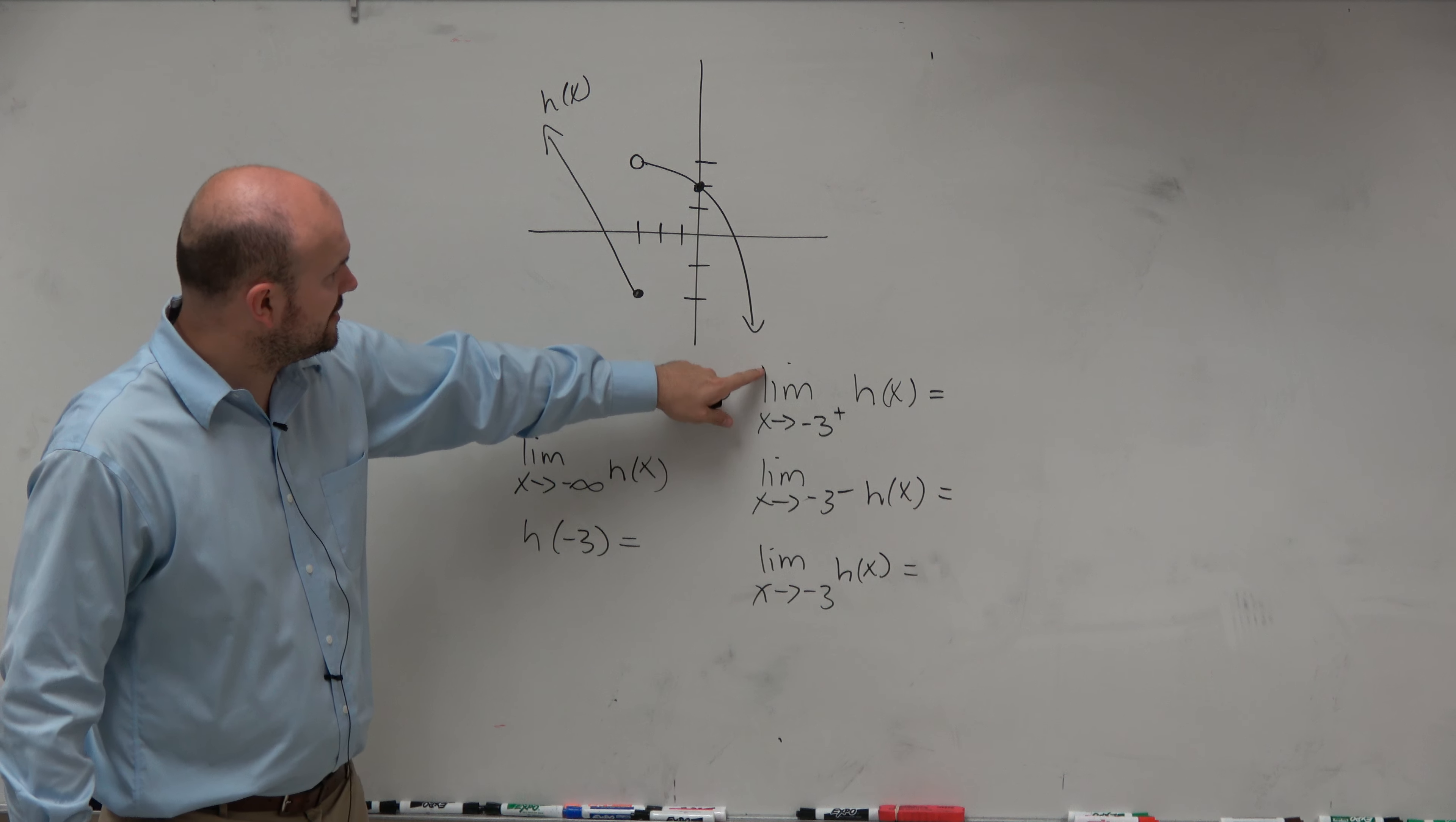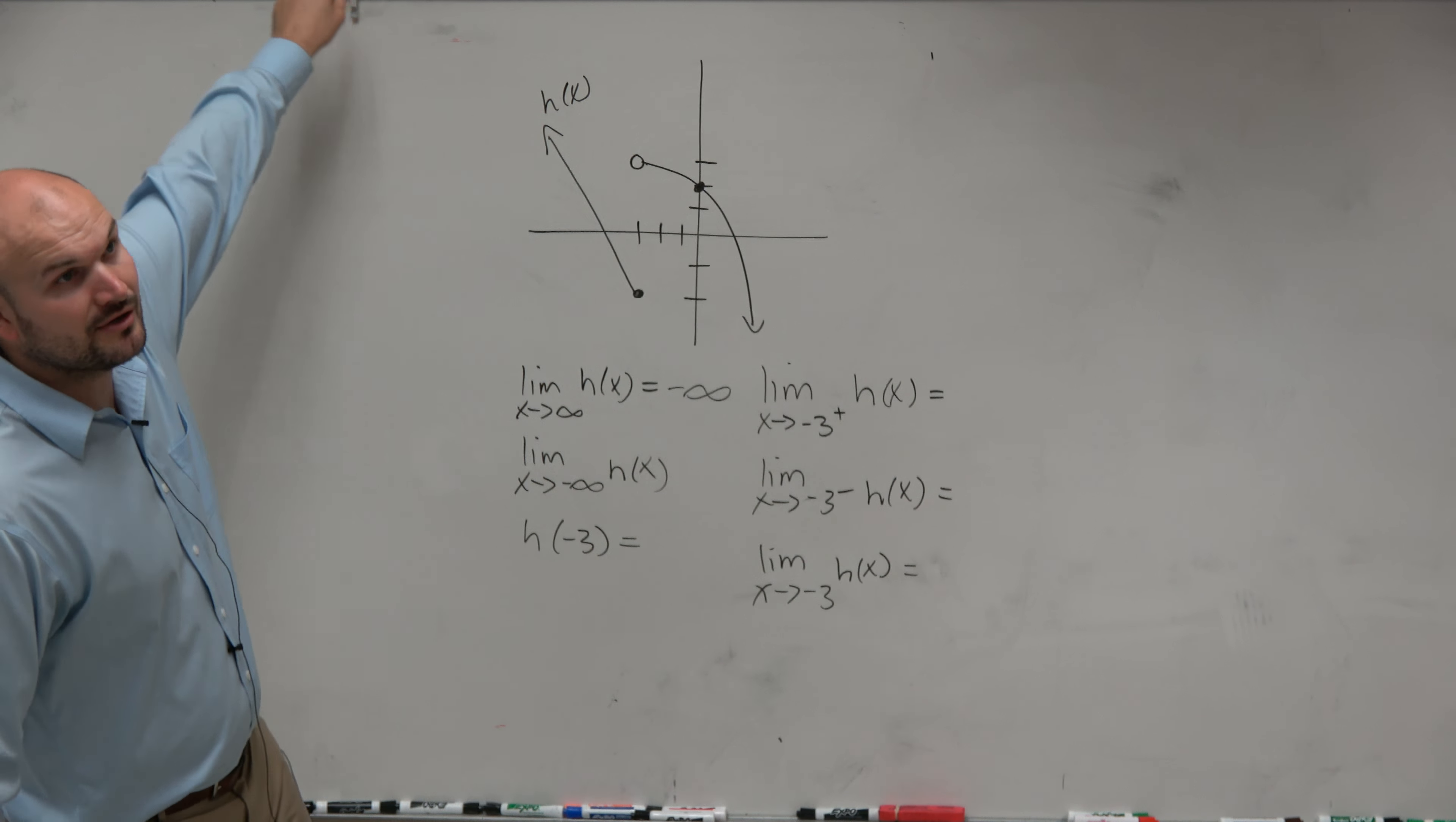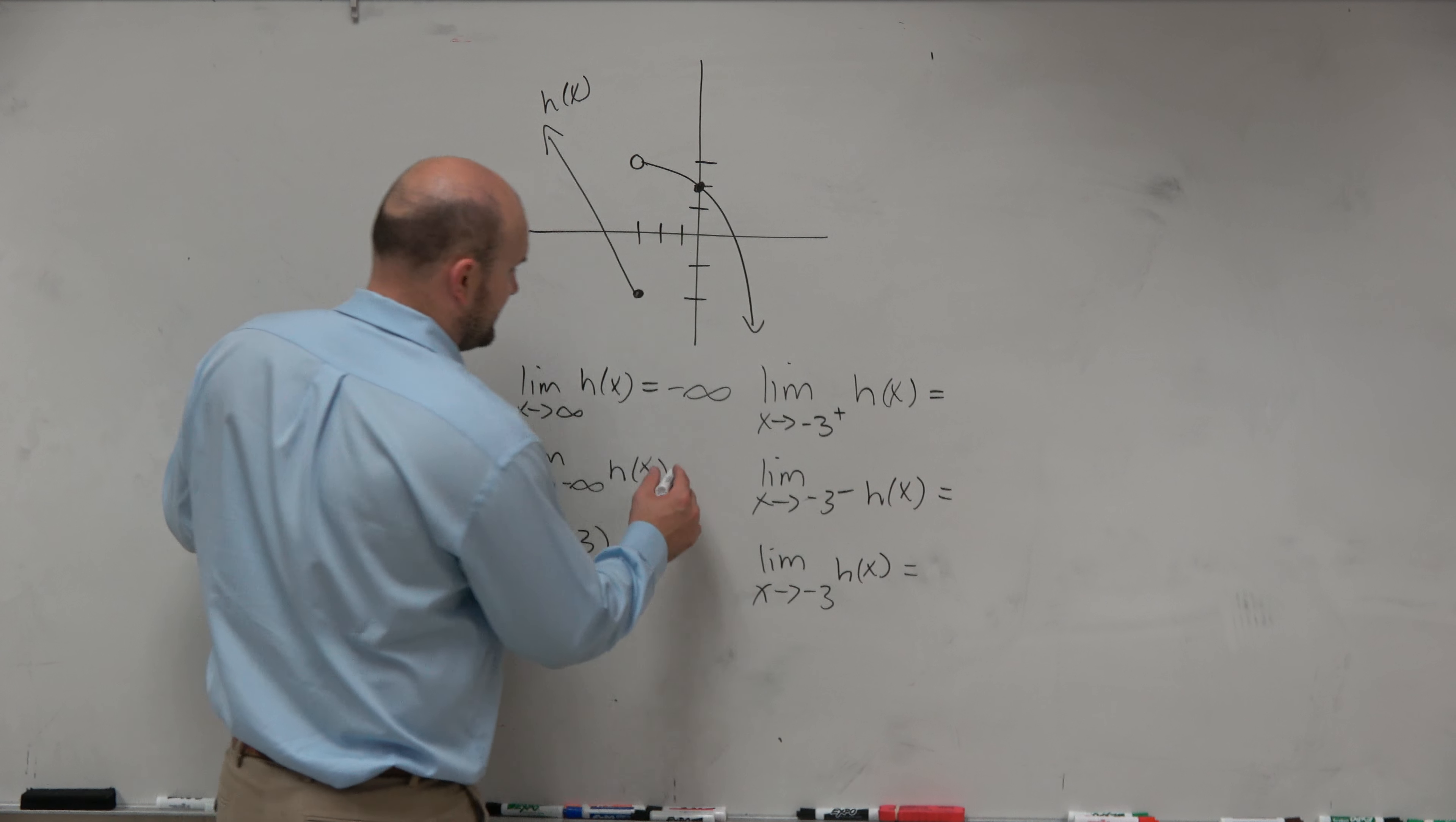Over here, as x goes to negative infinity, so you're coming from here, you jump down, and then you go up, and you're going to negative infinity, and you're going to positive infinity, right?